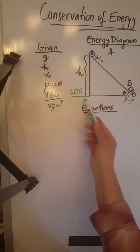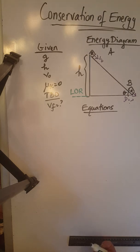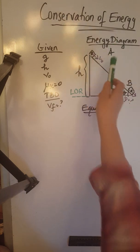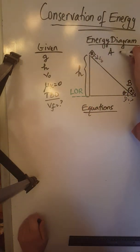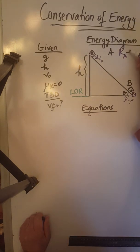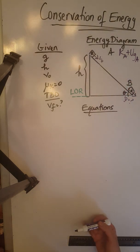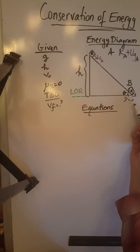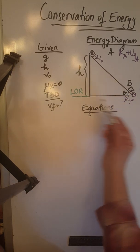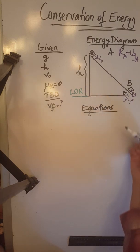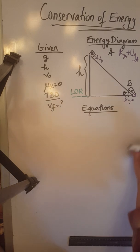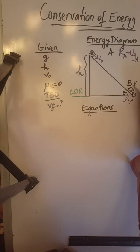This is very, very important to do; otherwise you cannot even discuss the possibility of an object possessing gravitational potential energy. I use the symbol LOR to show that this is the level of reference from which the potential energy will be determined. At point A, the object is already in motion, so it has kinetic energy, and it is above the level of reference, so it also has gravitational potential energy — both kinetic and gravitational potential energy. At point B, the object is on the level of reference, so there will be no gravitational potential energy — only kinetic energy.